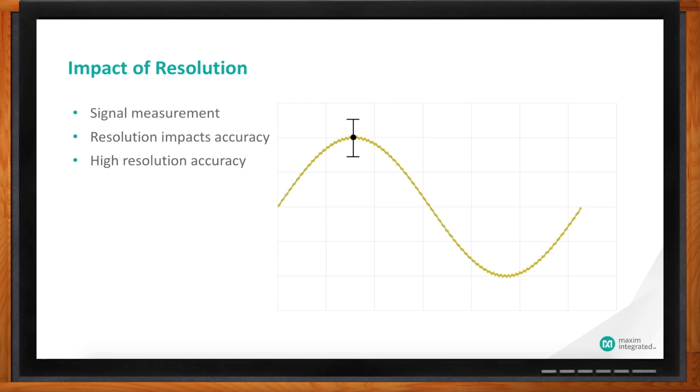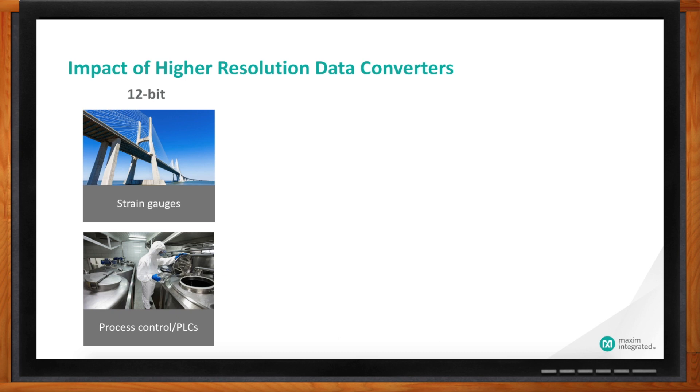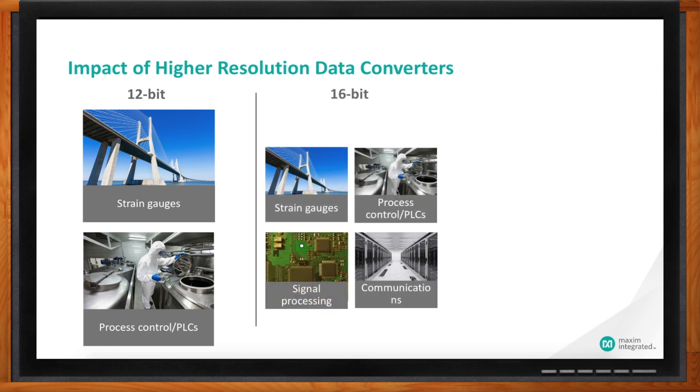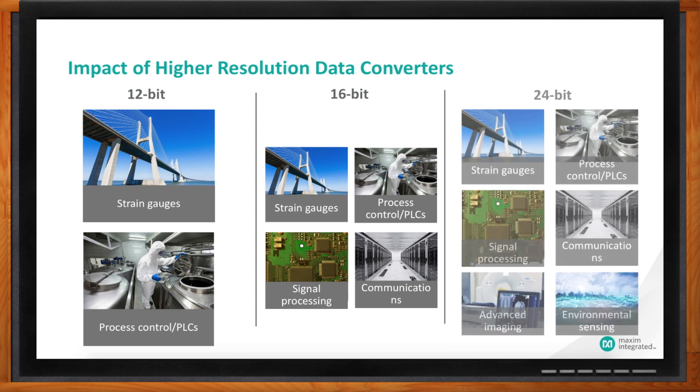So we've started way back at 12-bit data converters, right? But Dave, how have we gotten to 24-bit? What does that path look like? Yeah, the path has been a tremendous expansion in the resolution of data converters and the demand, the request from the global market for these devices has been growing and insatiable. When 12-bit converters first came out many, many years ago, they were applied to strain gauges and process control. And then 16-bit data converters came out and those were applied to those same applications, especially ones that required higher accuracy, but new applications also like signal processing and communication. With 24-bit data converters, we continue to see the application of the data converters in those end markets, but also in more and more markets. As I mentioned earlier, advanced imaging, environmental sensing as the performance of these data converters fits these applications.